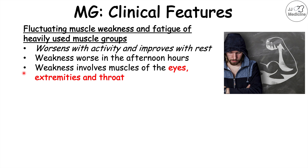There are particular muscle groups more commonly affected in myasthenia gravis, including the muscles of the eyes, the extremities, and the throat. We're going to break it down and get into more specific details for each of these muscle groups.